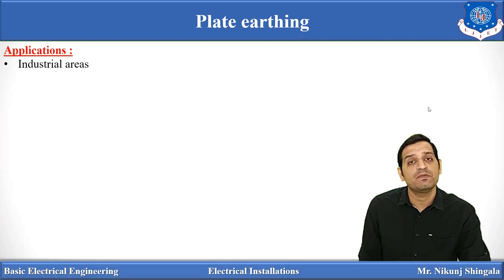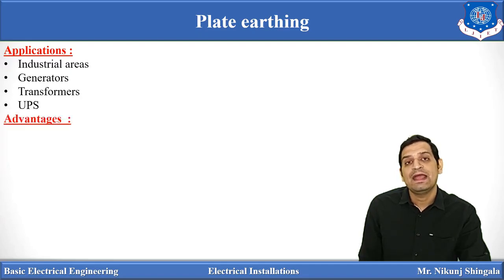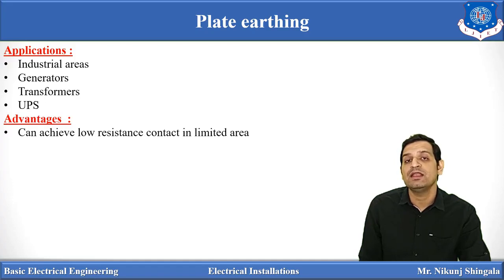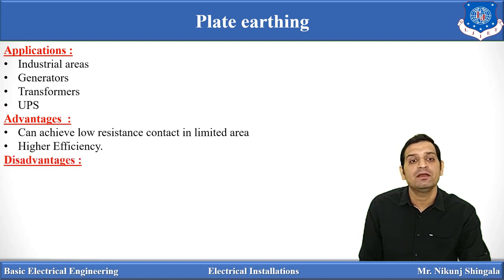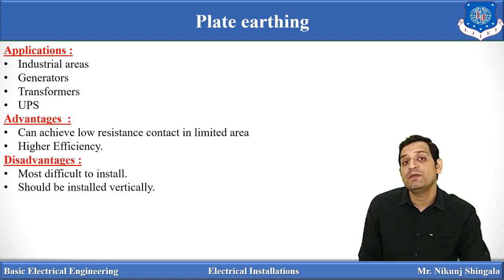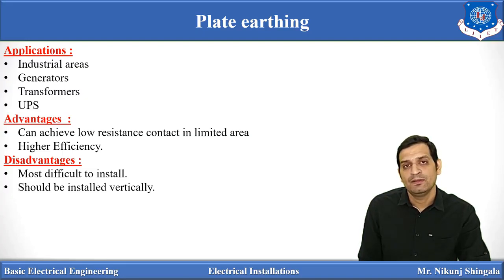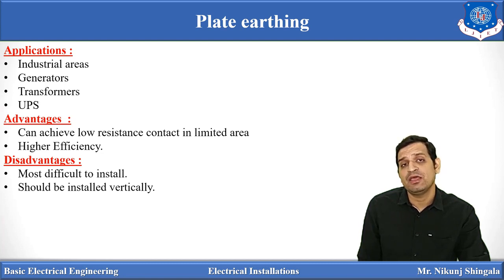Plate earthing is basically used in industrial areas, for generators, transformers, and high voltage applications. It is also used in UPS systems. The advantage is that it can achieve low resistance contact in a limited area, and it has higher efficiency compared to the pipe earthing method. The disadvantage is that it is difficult to install and should be installed vertically. The choice between pipe and plate earthing depends on the type of application and voltage being handled.